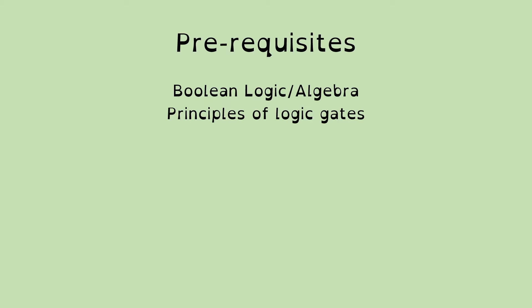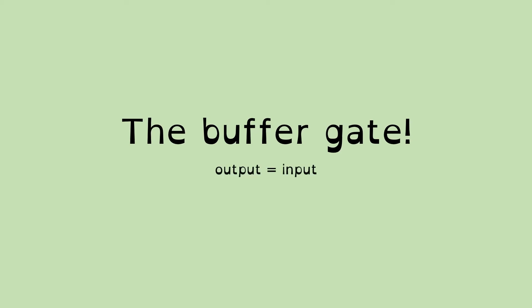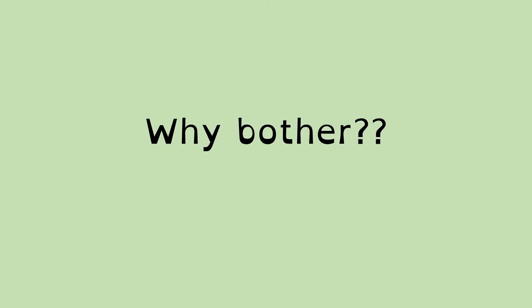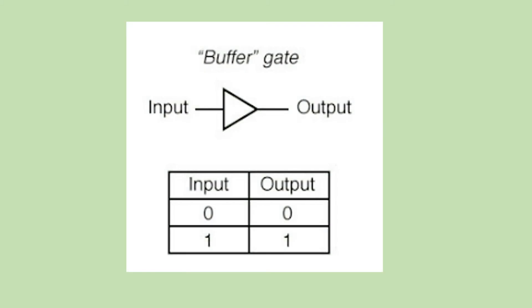In this video I'm going to talk about a thing called the buffer gate, which is a curious gate in some ways and isn't often used because the output is the same as the input. It only has one input and one output, and they're the same, so effectively it doesn't really do anything. Here's the symbol for it — this diamond shape with the input going in at the flat end and the output coming out at the pointy end. As you can see, the input is exactly the same as the output, and it hasn't even got a proper name in capital letters like all the other gates.